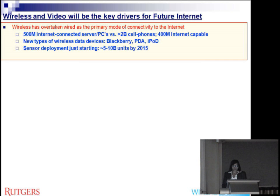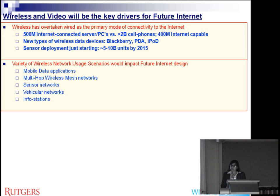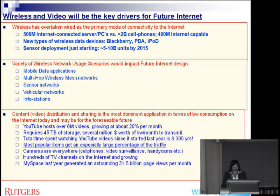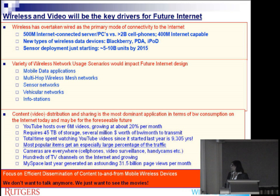Further motivating the idea of future internet, wireless and video are going to be the key features. There are already a very large number of mobile and wireless devices connecting to the network, and much more is predicted for future years. There are many more applications than in the past — mostly mobile data retrieval, some sensor network applications, vehicular applications, and so on. Content distribution is the main source of bandwidth consumption on the internet today. Therefore, the focus for future internet design should be on efficient dissemination of content to mobile and wireless devices.